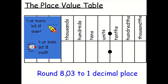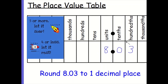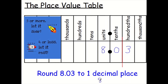Round 8.03 to one decimal place. I want one thing after the decimal point, so think about drawing a line here. Just look next door — does that affect the 0? It's 4 or less; 3 is 4 or less. So I've got to let it rest at 8.0.